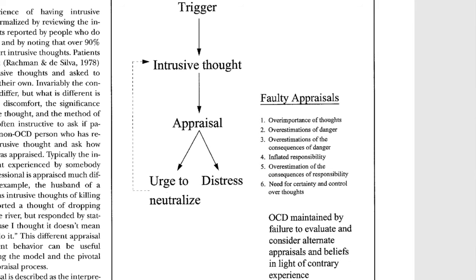I don't want to go into too much detail on all the other techniques used by CBT, so I'm just going to briefly show a diagram that explains the different ways OCD can be targeted by this treatment. Looking at faulty appraisals, this includes the over-importance of thoughts, danger or consequence of danger, inflated responsibility, overestimation of the consequences of responsibility, and the need for certainty and control over thoughts.